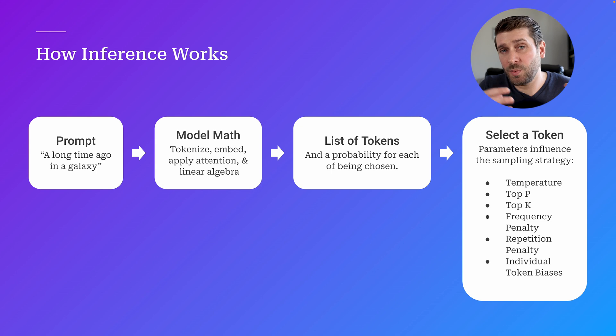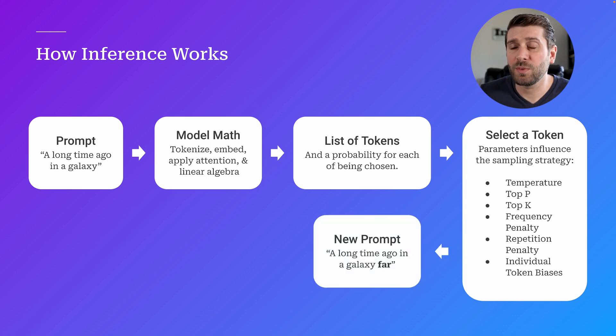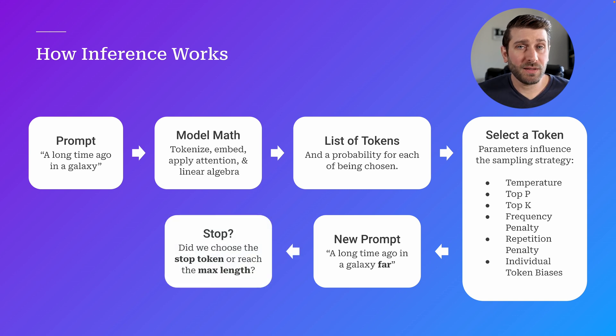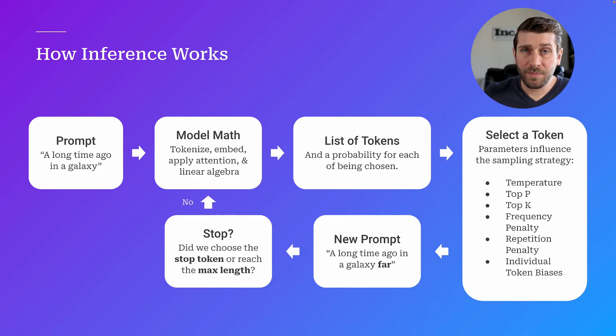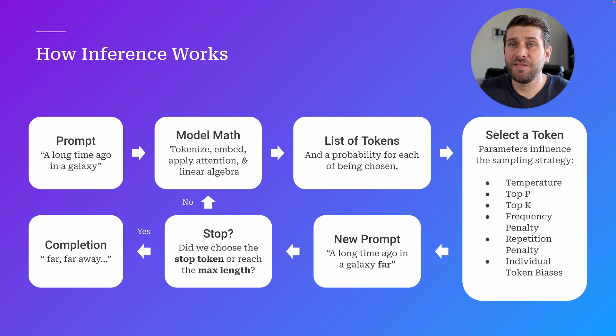From the list of tokens, we select a token, then we have a new prompt — we add that token back in: 'a long time ago in a galaxy far.' Now the system decides: do we stop? The model stops if it generates the stop token, meaning it thinks it's done based on its training, or if it simply hits the maximum length specified — a 'max new tokens' parameter. If it didn't stop, we repeat the whole loop again, and hopefully we get a completion like 'far, far away.'